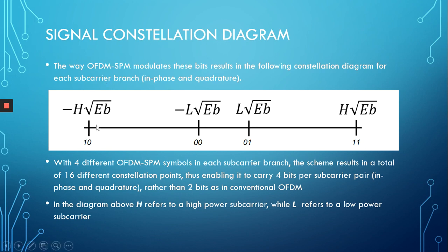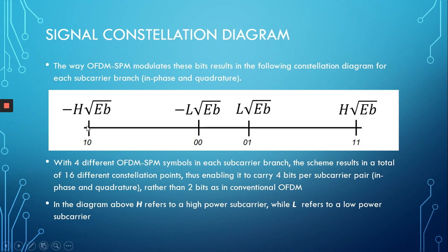For example, if we consider the in-phase subcarrier, we have four constellation points, each transferring two bits. The first bit determines the power of the subcarrier — high or low — where a 1 corresponds to high and a 0 corresponds to a low power level. The second bit is carried by the QPSK symbol modulation and determines the phase of the symbol: a 0 indicates a phase shift leading to a negative symbol, and a 1 indicates no phase shift, giving a positive symbol.